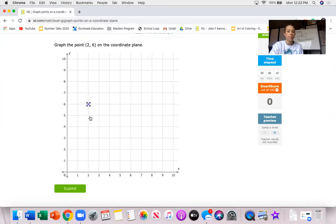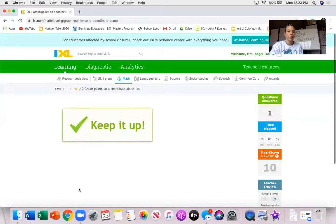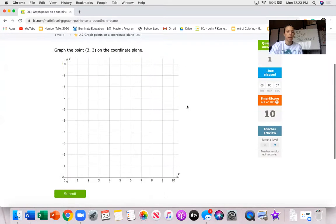So again this point if I trace it down to the X it crosses at two and if I trace it to the Y it crosses at six. So this is the point two six. I click submit and there you go it gives me another point.